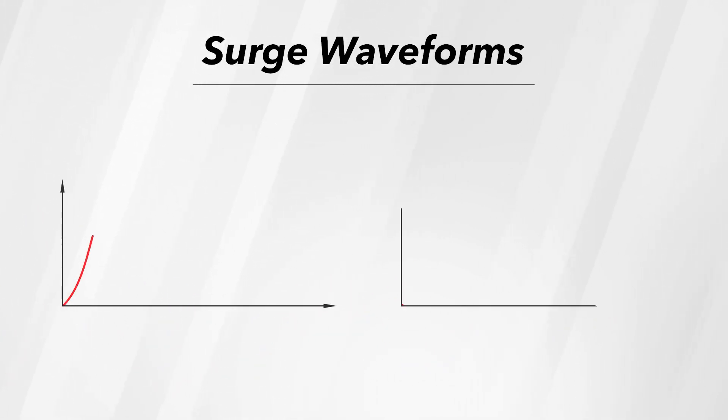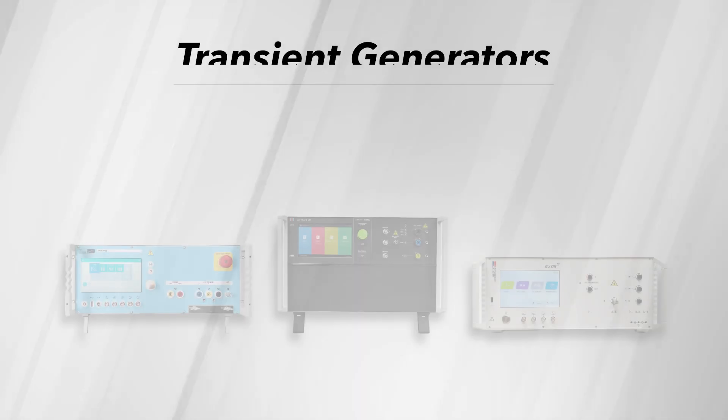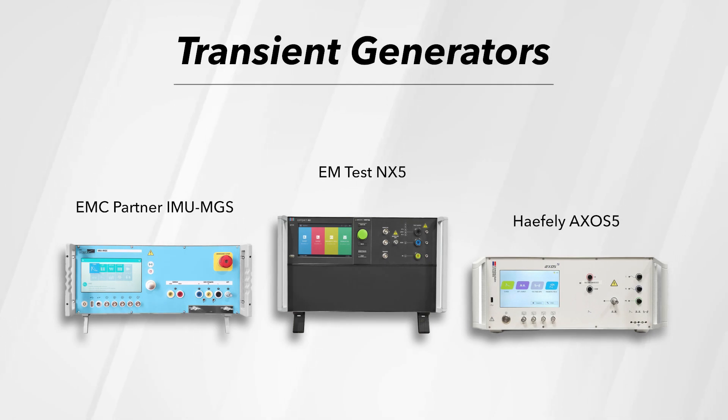Each waveform can vary based on the application, with some telecom pulses having a duration of 700 microseconds. The devices used to replicate these surges are commonly referred to as transient generators.